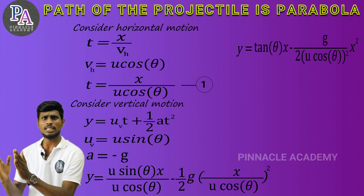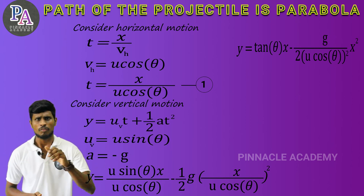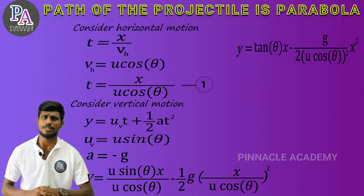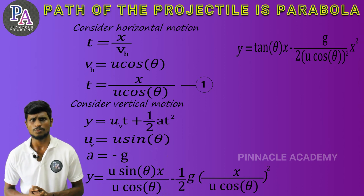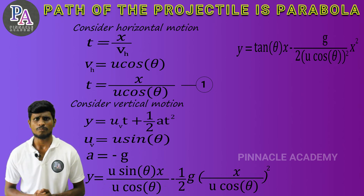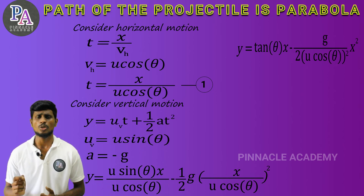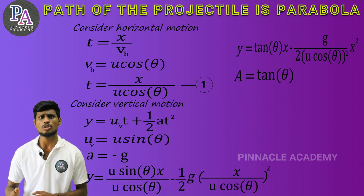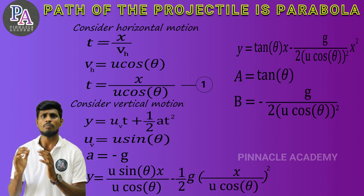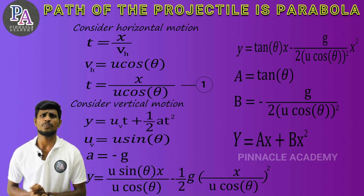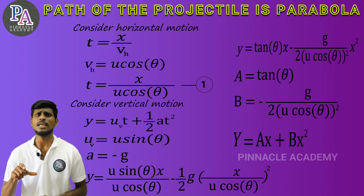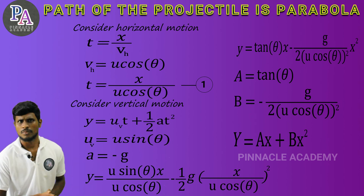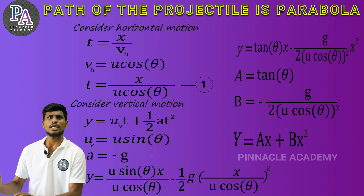Now we have tan theta, and then x, and then minus 1 by 2, g divided by u squared cos squared theta, giving y equal to x tan theta minus g x squared by 2 u squared cos squared theta. This is in the form y equal to a x plus b x squared, which is the equation of projectile motion. I will do the derivative.